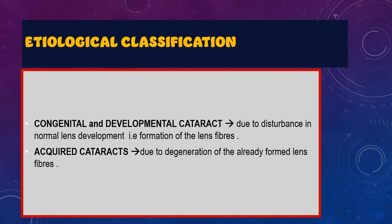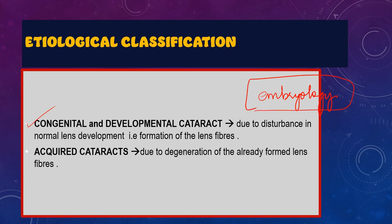In the etiological classification we have two types. Number one is the congenital cataract or the developmental cataract. As the name suggests, they develop at birth or during the time period when the lens is actually developing. This happens because of some disturbance in the normal lens development or the formation of lens fibers. We already have a video on the embryology of the lens explaining in detail the formation of the lens fibers. Whenever there is some disturbance in the formation of the lens fibers during the developmental period, it leads to the developmental cataract.